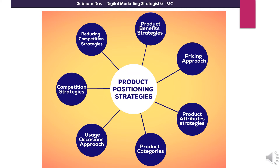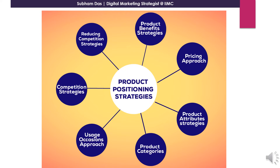Next we will study an example of product positioning. Here I am trying to show you an example based on just two attributes — quality versus price. You can see that Mercedes-Benz, which is considered a high-quality car, has the highest price. Next is Ferrari, which has a slightly lower quality and slightly lower price than Mercedes-Benz. Next would be Audi, which is a little lower in quality and a little lower in price.